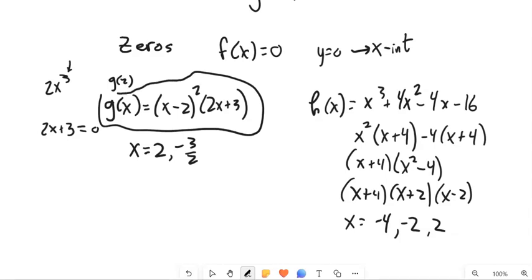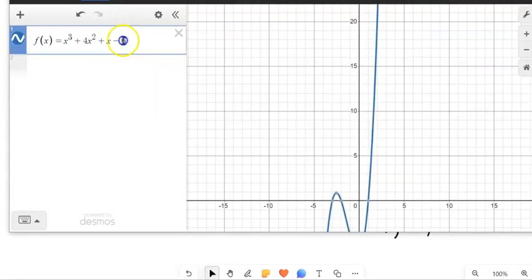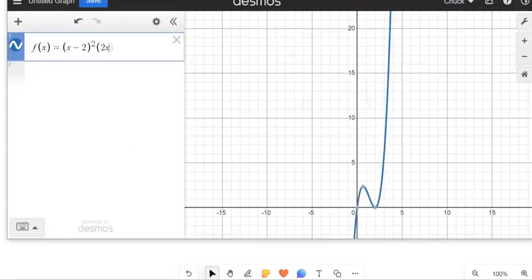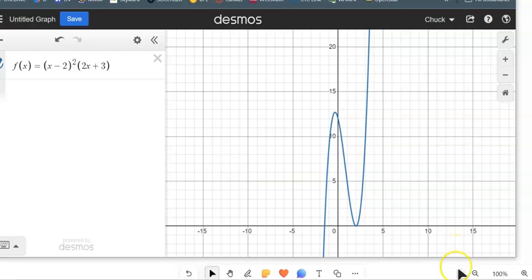Let's take a look at what the graph of this looks like. So I'm going to grab Desmos again, bring it on down. So here's my, remember we said we had one here at two and one here at negative three halves.